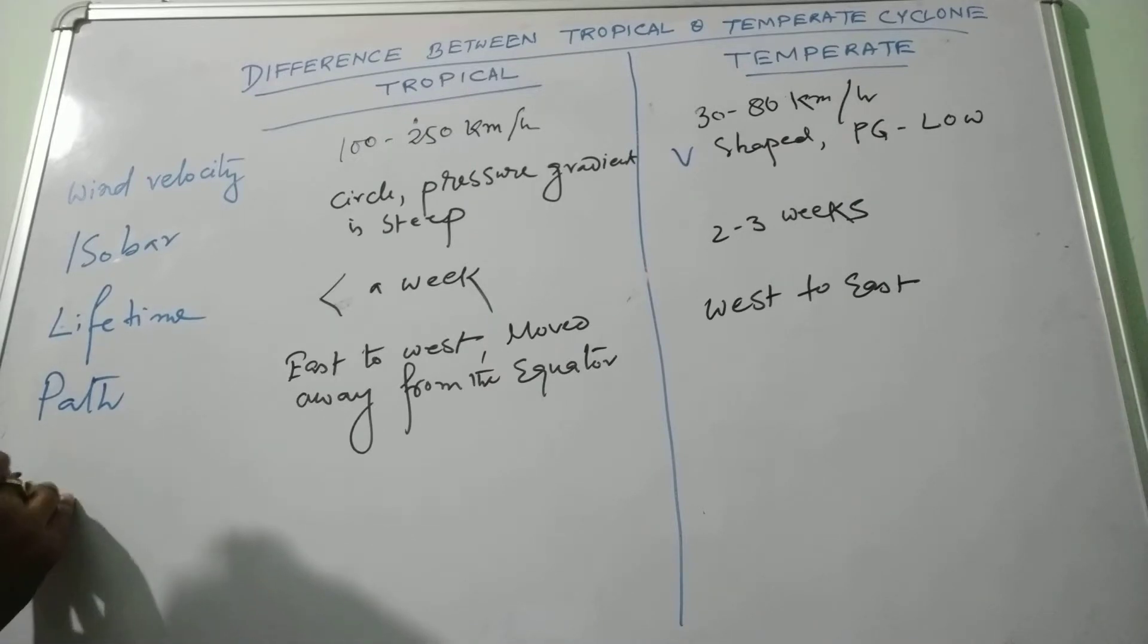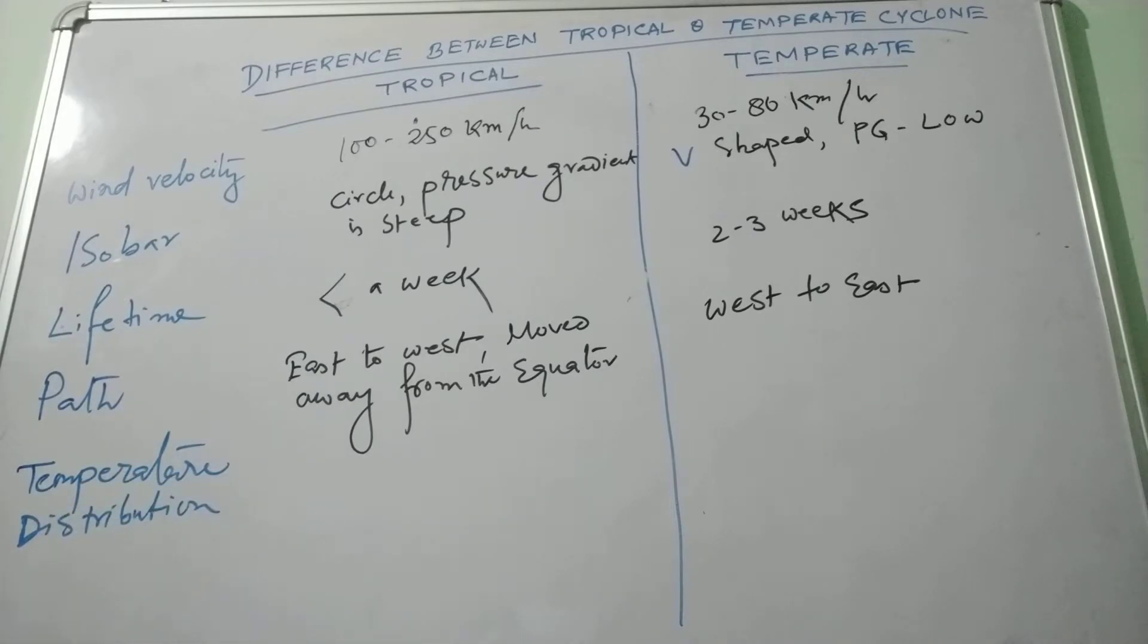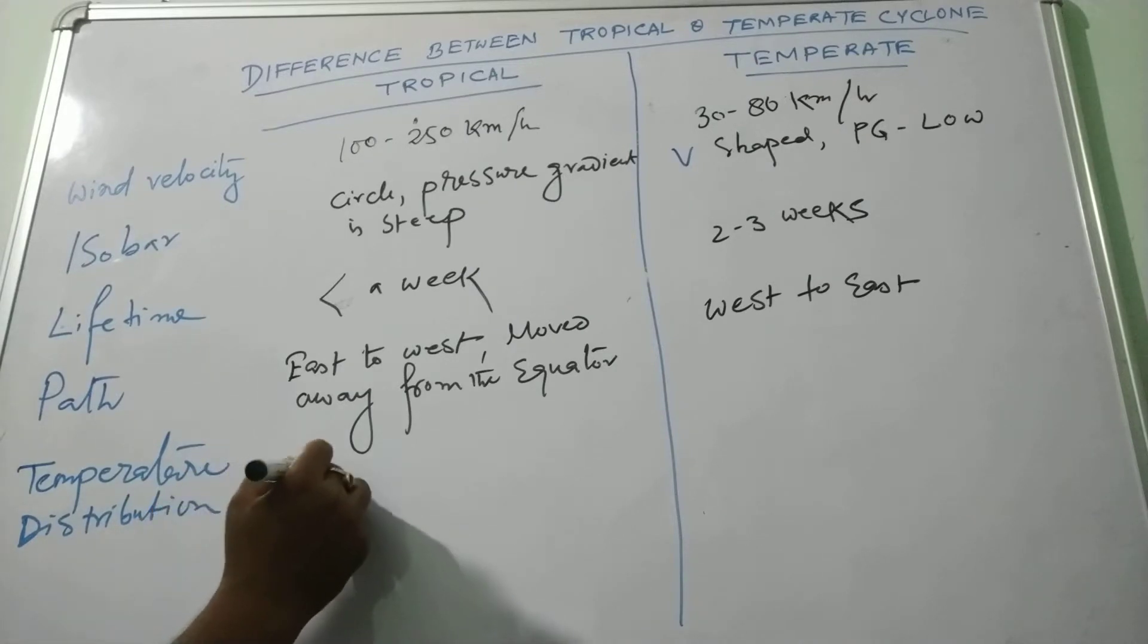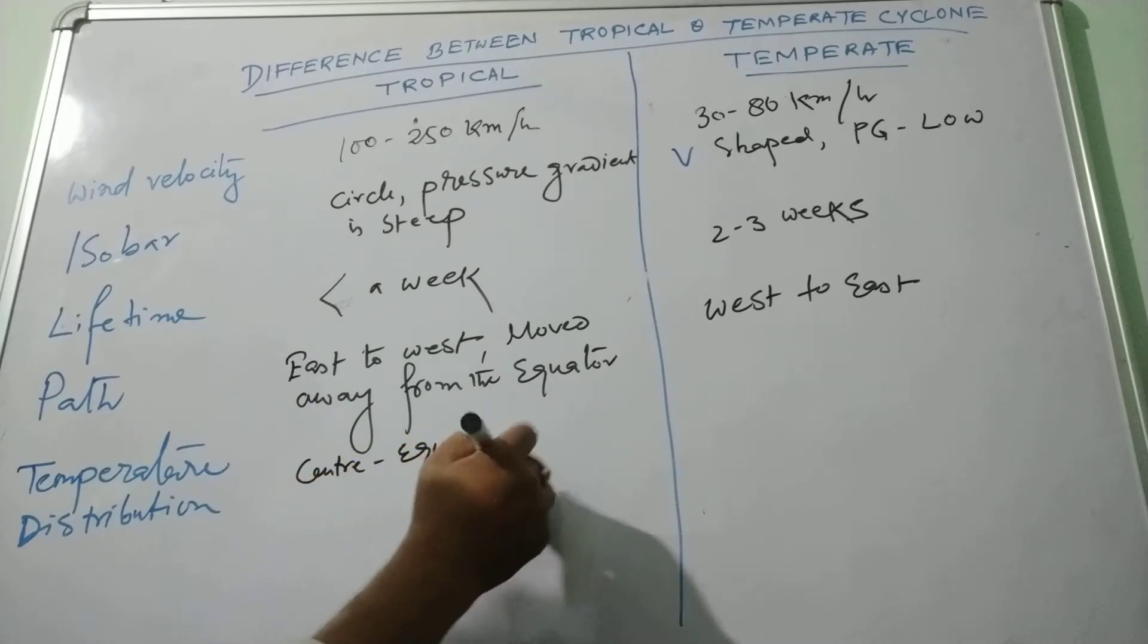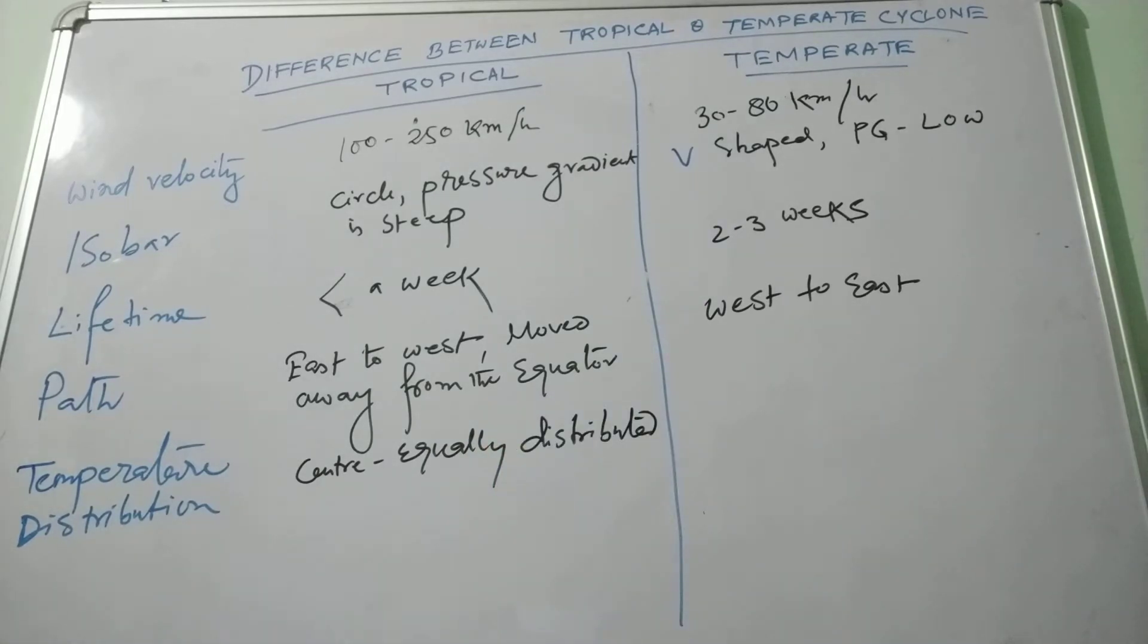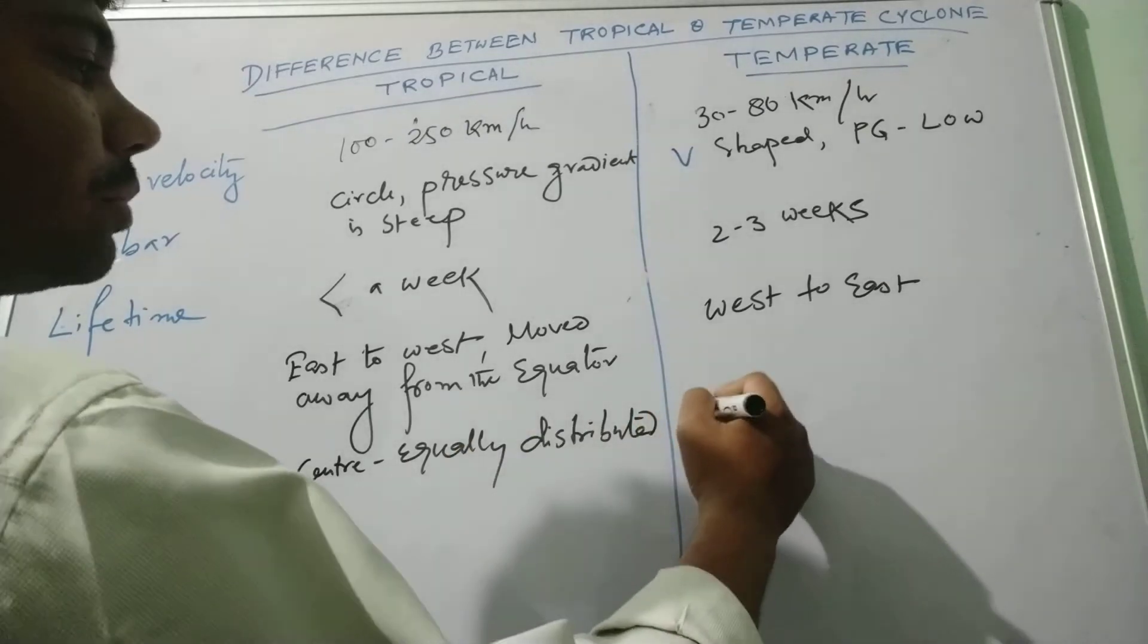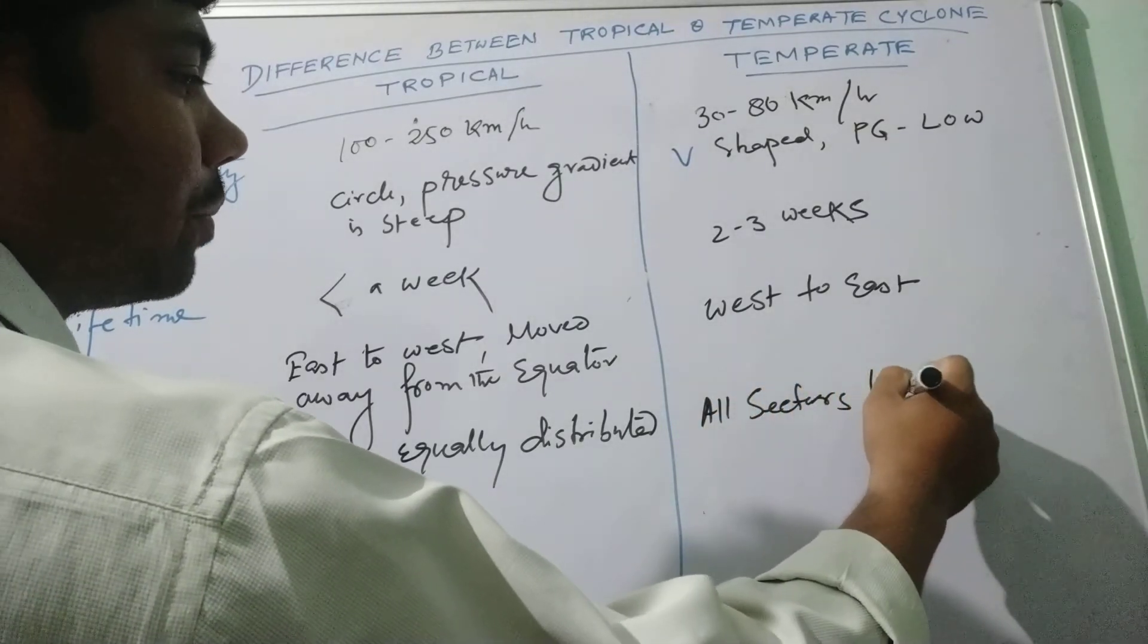Temperature distribution. Temperature at the center is almost equally distributed in all sectors. And in case of the temperate cyclone, all sectors have different temperatures.